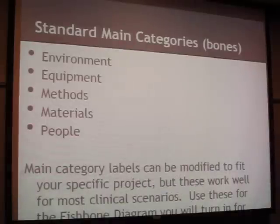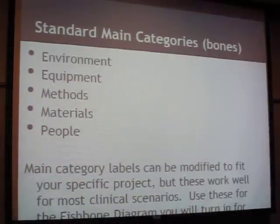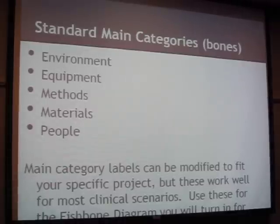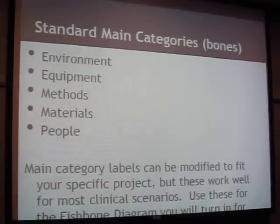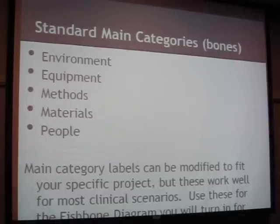The main categories are environment, equipment, methods, materials, and people - those are the standard major bones. Those are the ones we want you to use for your fishbone diagram that you'll turn in for the challenge, simply because having all these categories ensures you're not forgetting anything major. You're welcome to add more bones if you want. The difference between materials and equipment depends on the process you're analyzing.